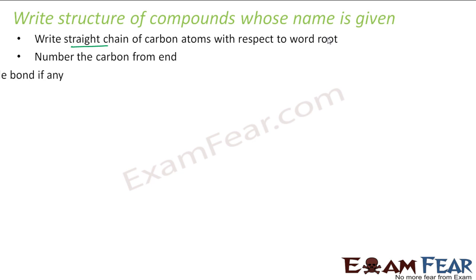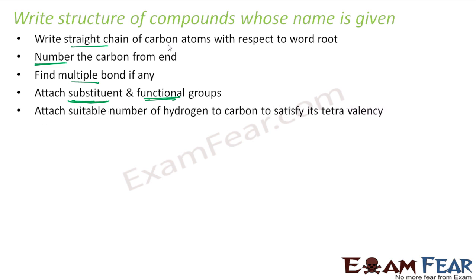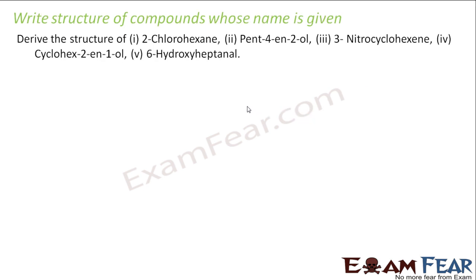Number the carbon from the end. Find the multiple bond if there is any. Attach the substituents and functional groups. Then attach the suitable number of hydrogen to make sure that all the carbon satisfies tetravalency. And with that, you will be able to get the compound whose name is given.